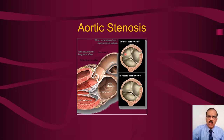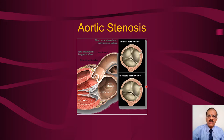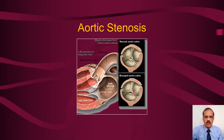Sometimes these two cusps fail to separate from each other congenitally, and one may end up having a bicuspid aortic valve. A bicuspid aortic valve is a relatively common condition as a cause of aortic stenosis. In our part of the world, the commonest cause is still rheumatic, but in the developed world where rheumatic valve disease is less common, bicuspid aortic valve disease is still common. This could be asymptomatic — maybe just an incidental diagnosis — or it could progress to frank aortic stenosis or additional aortic regurgitation.